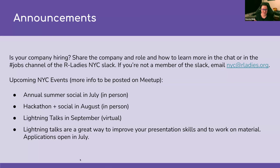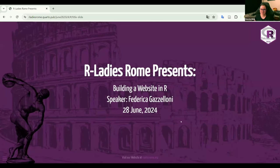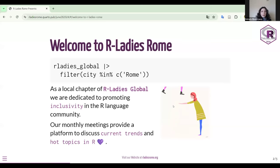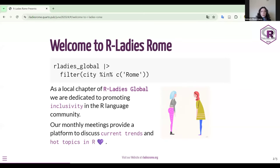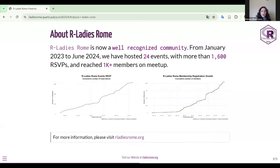I'll stop sharing and hand it over to R-Ladies Rome. Good afternoon, everyone. It's a pleasure to have you here. My name is Rafaela and I'm going to introduce our chapter. R-Ladies Rome, as a local chapter of R-Ladies Global, is dedicated to promoting inclusivity in the R language community. Our monthly meetings provide a platform to discuss current trends and hot topics in R. From January 2023 to June 2024, we have hosted 24 events with more than 160,000 RSVPs and reached 1K members on Meetup.